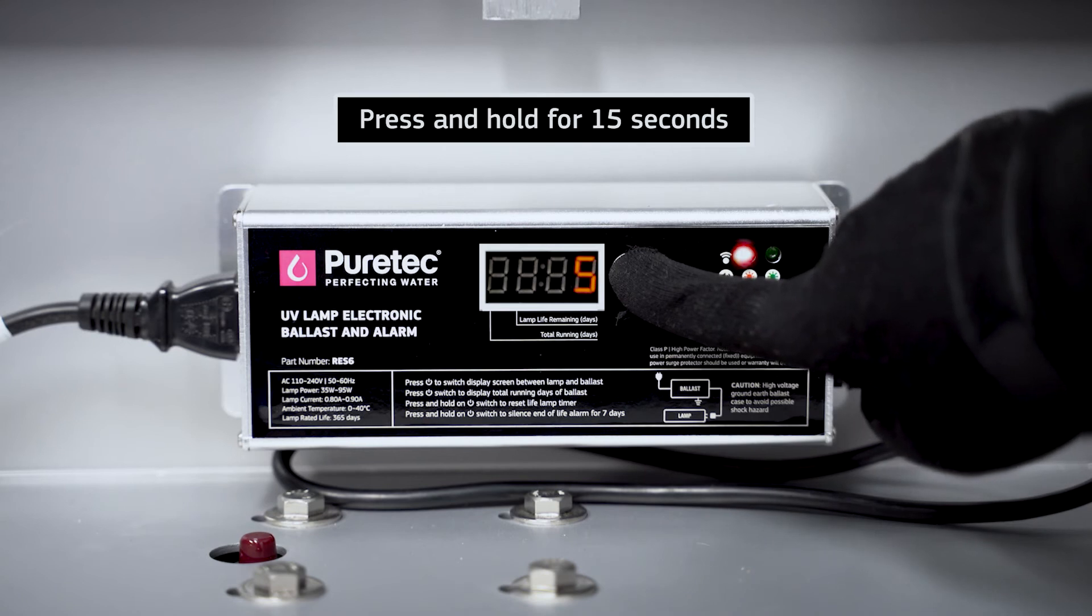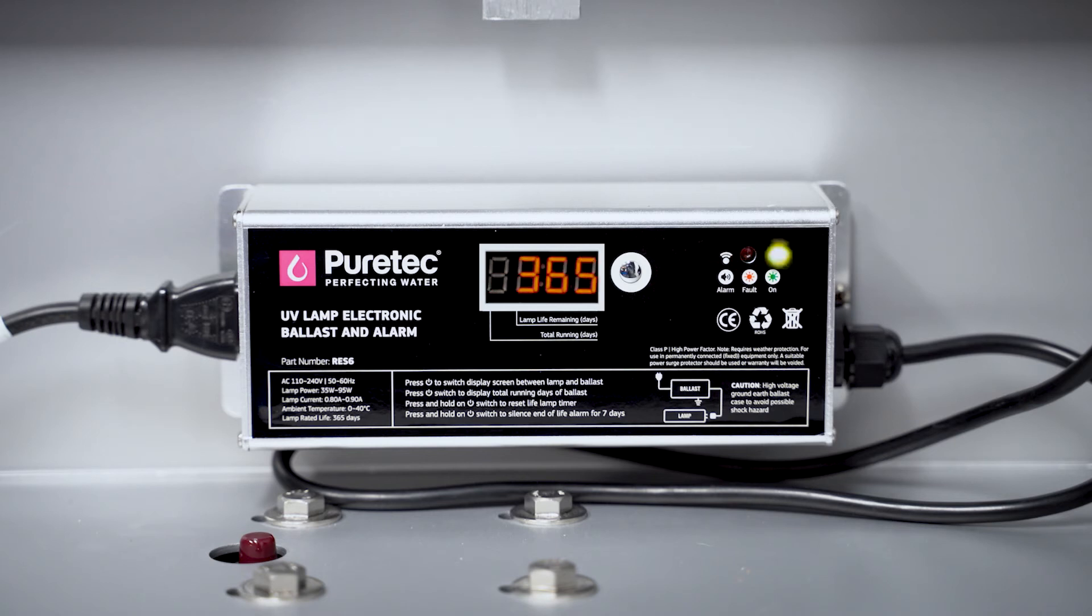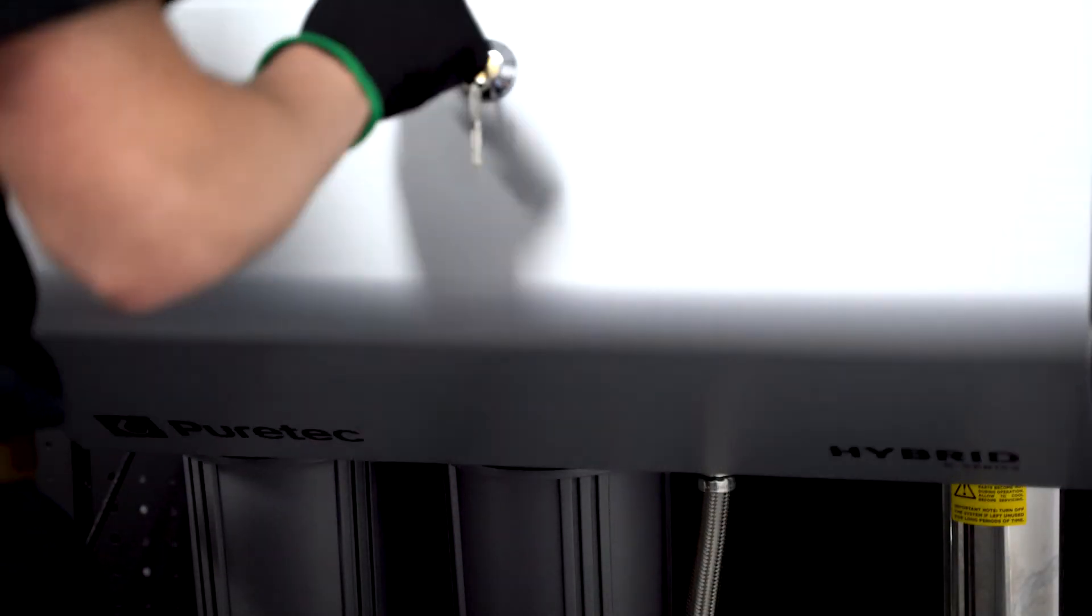To reset the countdown timer, press and hold the silver button for 15 seconds until reset is shown on the screen and a single beep is heard. The display will show 365 days and the green on LED button will be lit. Close and lock the lid of the unit.